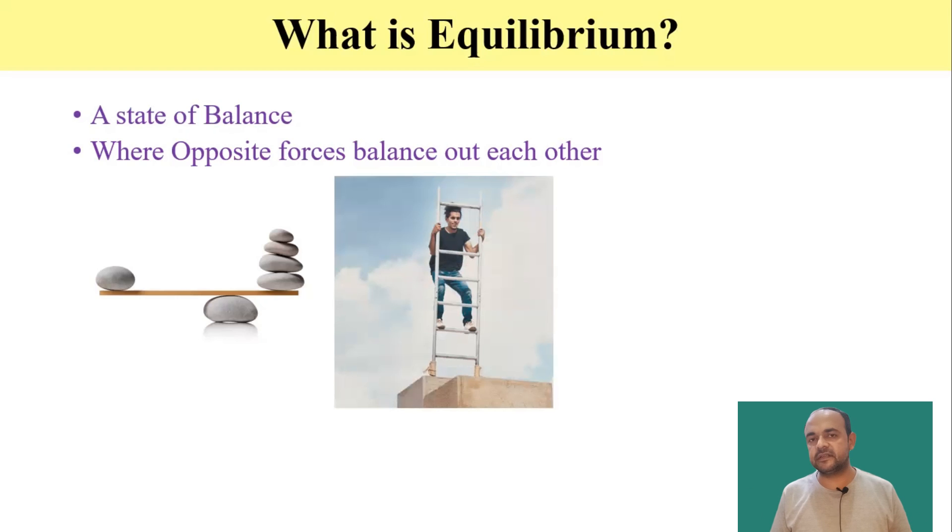Similarly, in other picture, you can see a man performing a very difficult art. He will be in equilibrium when different forces acting from right, left, up or down will be cancelling out or balancing out each other. And in that state, we will say that the person is in equilibrium.